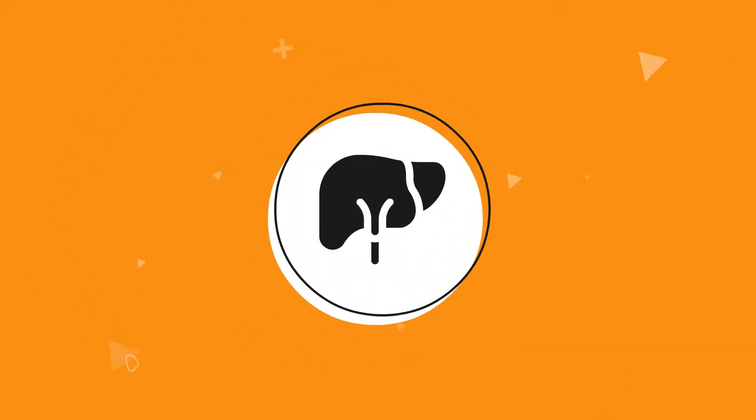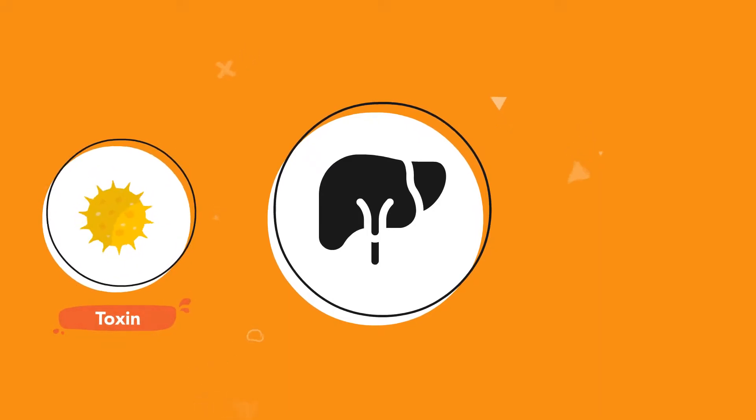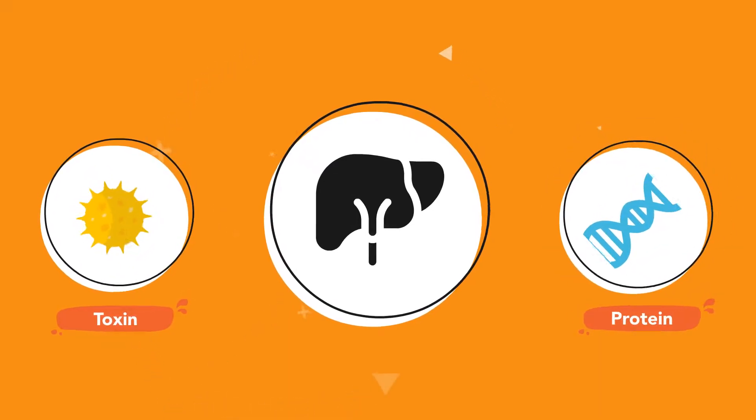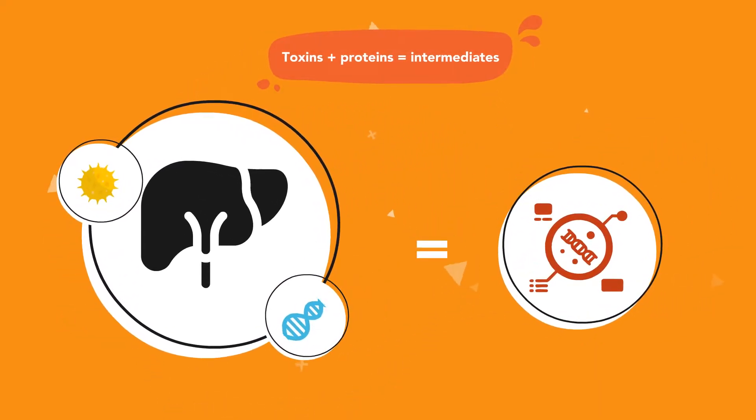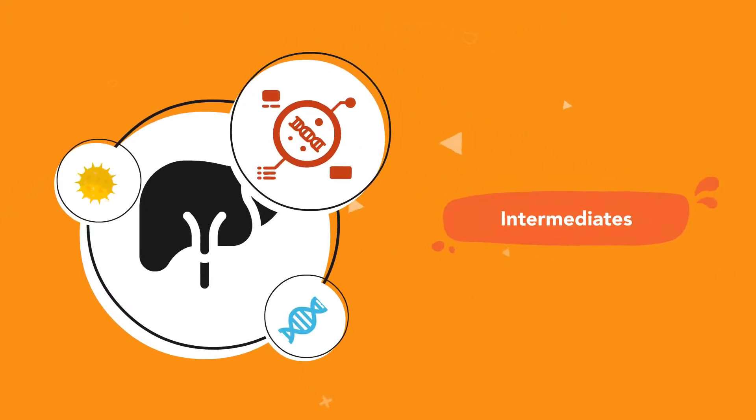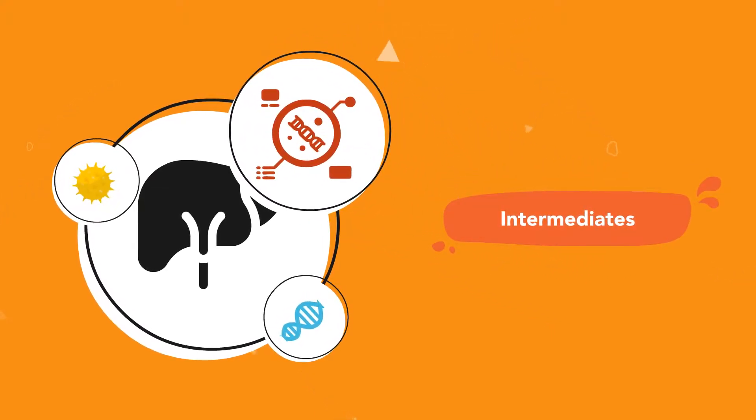Stage 1: During phase 1, toxins are partially processed by proteins inside the liver into something called intermediates. These compounds are even more dangerous than when they were in their original form.